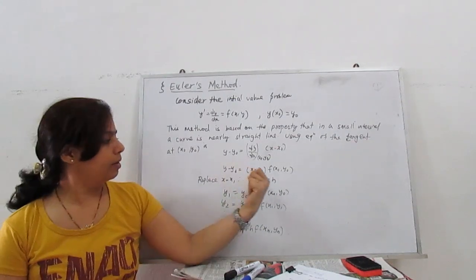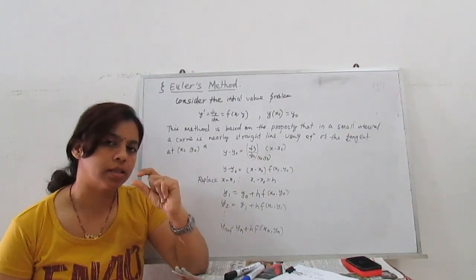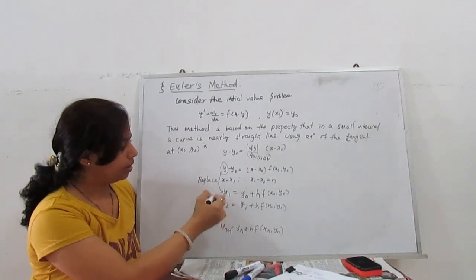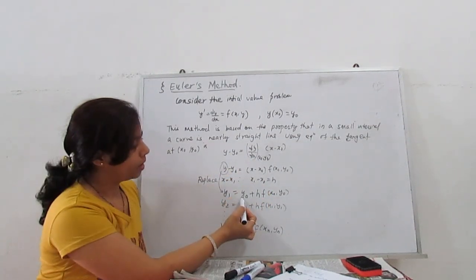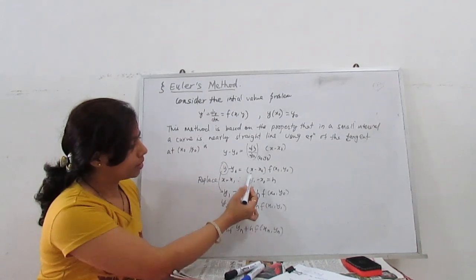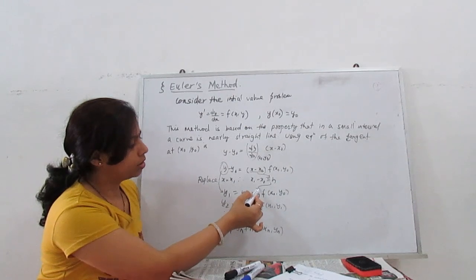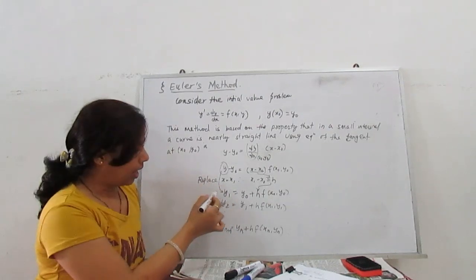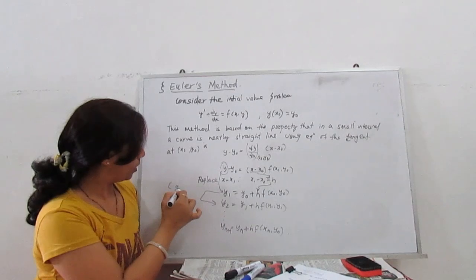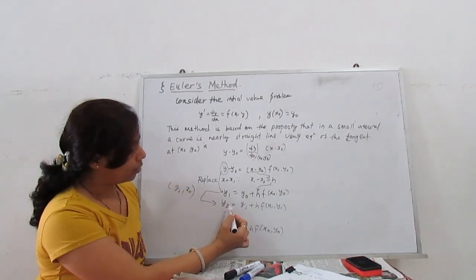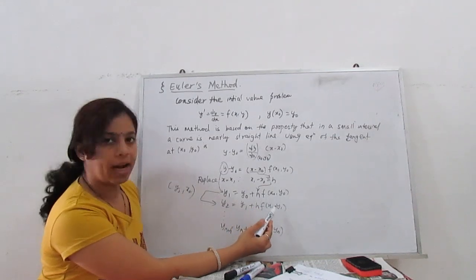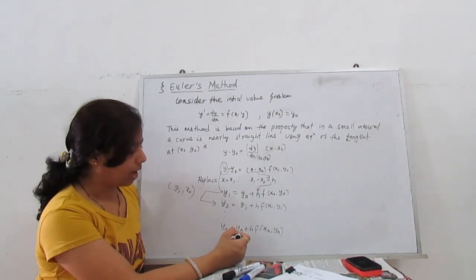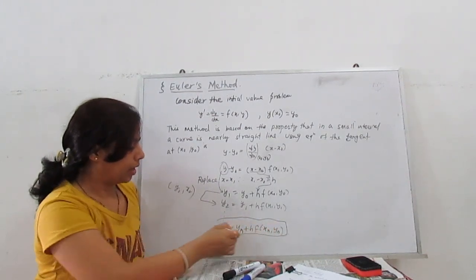Now if we replace x with x1 and y with y1, then x1 minus x0 is our interval h. So y1 minus y0 equals h times f(x0, y0), giving y1 = y0 + h·f(x0, y0). For y2 with x2: y2 = y1 + h·f(x1, y1), and so on. The general formula is: y(n+1) = yn + h·f(xn, yn). This is the Euler method's general formula.